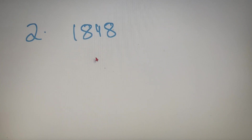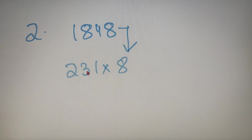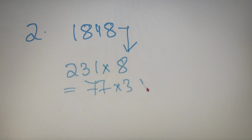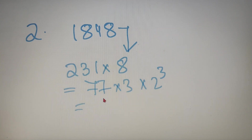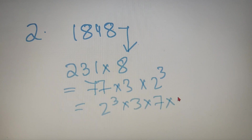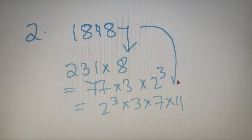For our second question, we have to calculate the sum of factors of the number 1848. First we prime factorize the number. Now 1848 can be written as 231 × 8. Now 231 can also be written as 77 × 3, and 8 can be written as 2³. Now 77 can also be written as 7 × 11. So the final result of prime factorization is 2³ × 3 × 7 × 11.